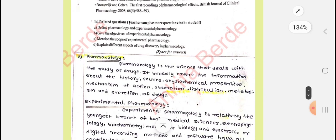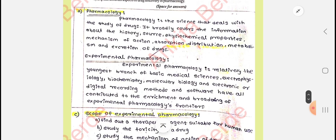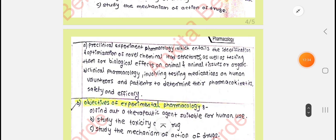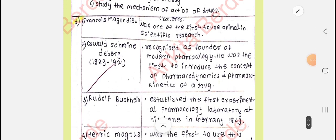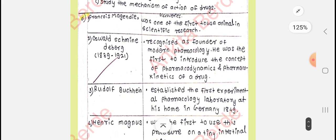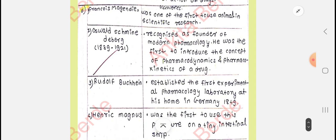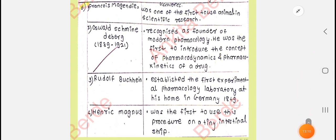Question D: explain the different aspects of drug discovery in pharmacology. For this, you have to write down the scientist name and their discovery — similarly to what you did for activity number two. You can take a screenshot of this and write it down; we had already discussed it.